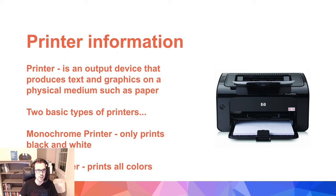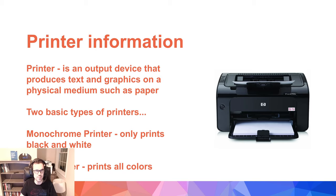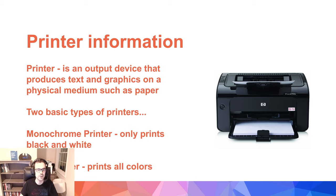A printer is an output device that produces text and graphics on a physical medium such as paper. It doesn't just have to be paper — as the lesson progresses you'll see it could be other things — but paper is the typical one. There are two basic types of printers: monochrome printers, which only print black and white, and color printers, which print all colors including black.